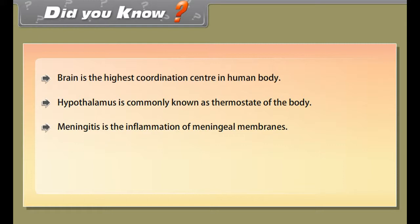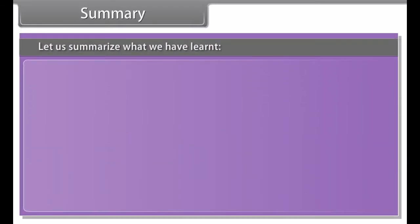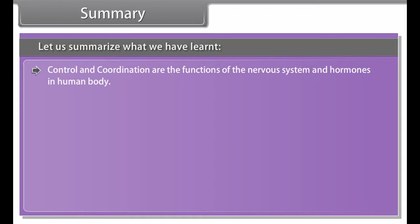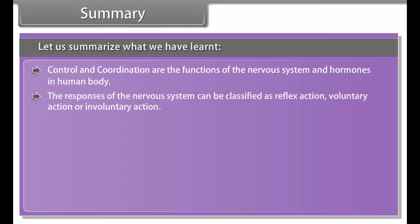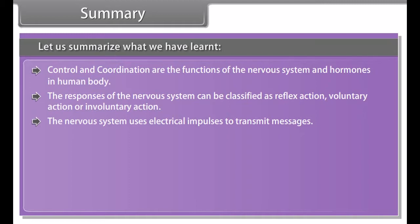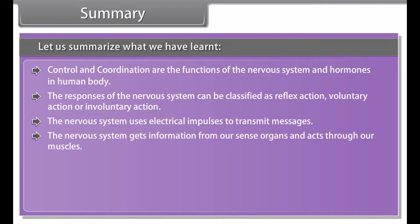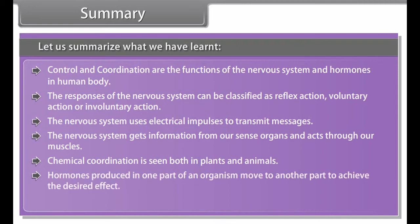The spinal cord controls reflex actions and conducts messages between different parts of the body and the brain. The peripheral nervous system consists of cranial nerves and spinal nerves, and assists in transmitting information between the CNS and the rest of the body. The autonomic nervous system has two divisions — parasympathetic and sympathetic — and involuntary activities like breathing and beating of the heart take place by the coordinated efforts of the medulla oblongata and the autonomic nervous system.